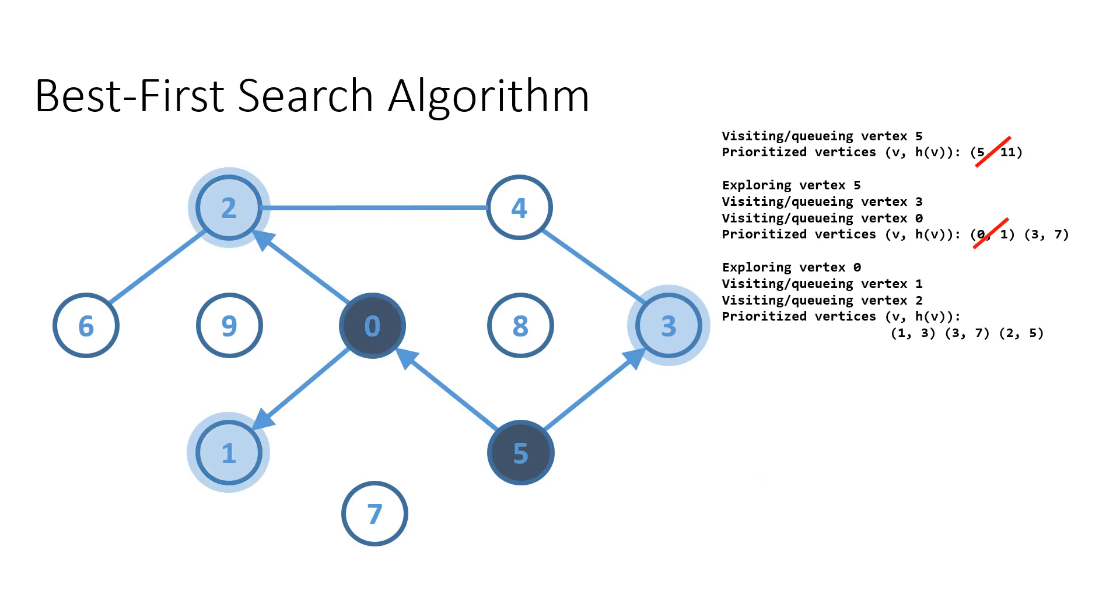On the next step, we are exploring vertex zero and adding vertices one and two to the priority queue by simultaneously removing vertex zero from the queue because we just explored it.